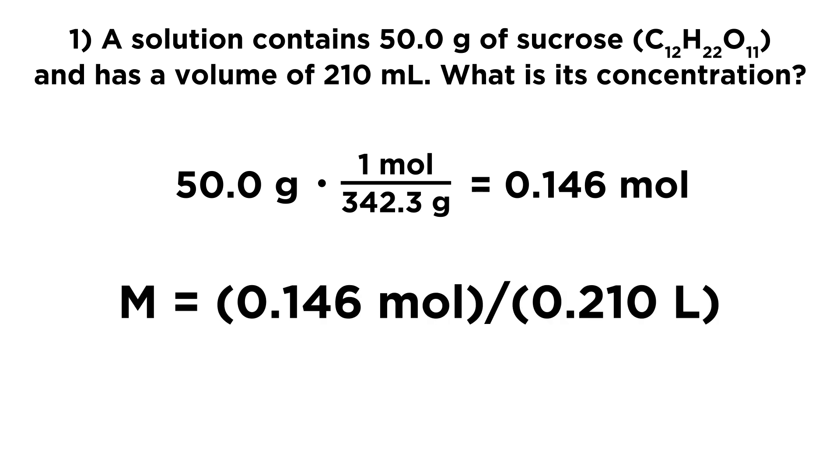Now to get the concentration, we just need to put moles over liters because concentration is moles per liter. And so we have 0.146 moles as we just got. And then liters, we have 210 milliliters. So let's just call that 0.210 liters. And then we can plug that into the calculator and we get 0.696 molar. That is the concentration of this solution of sucrose.